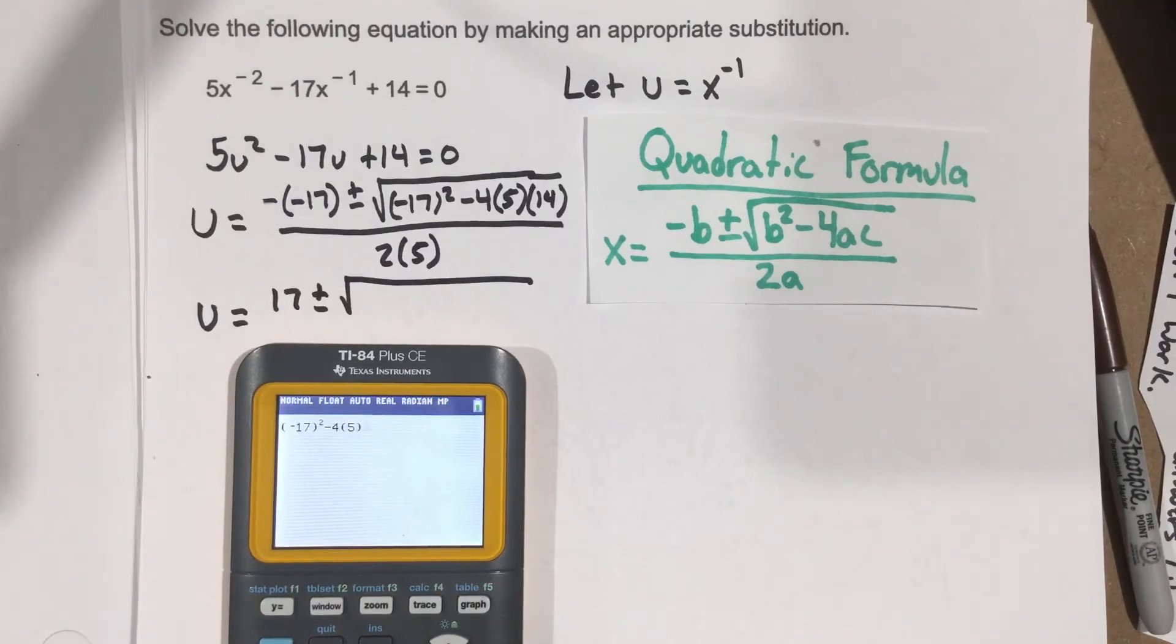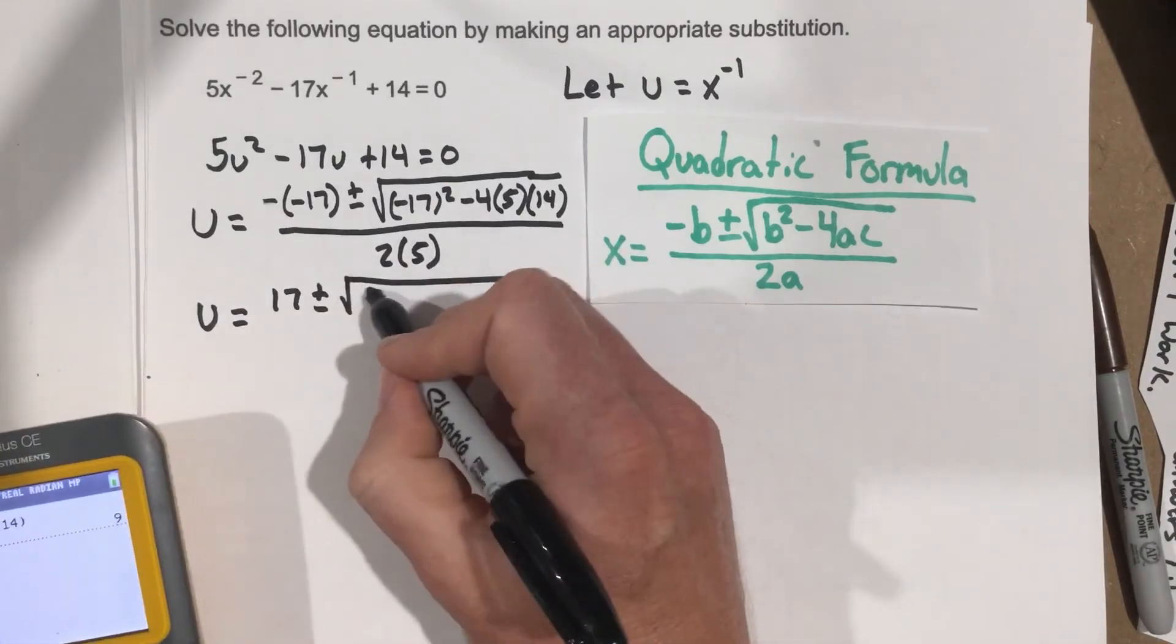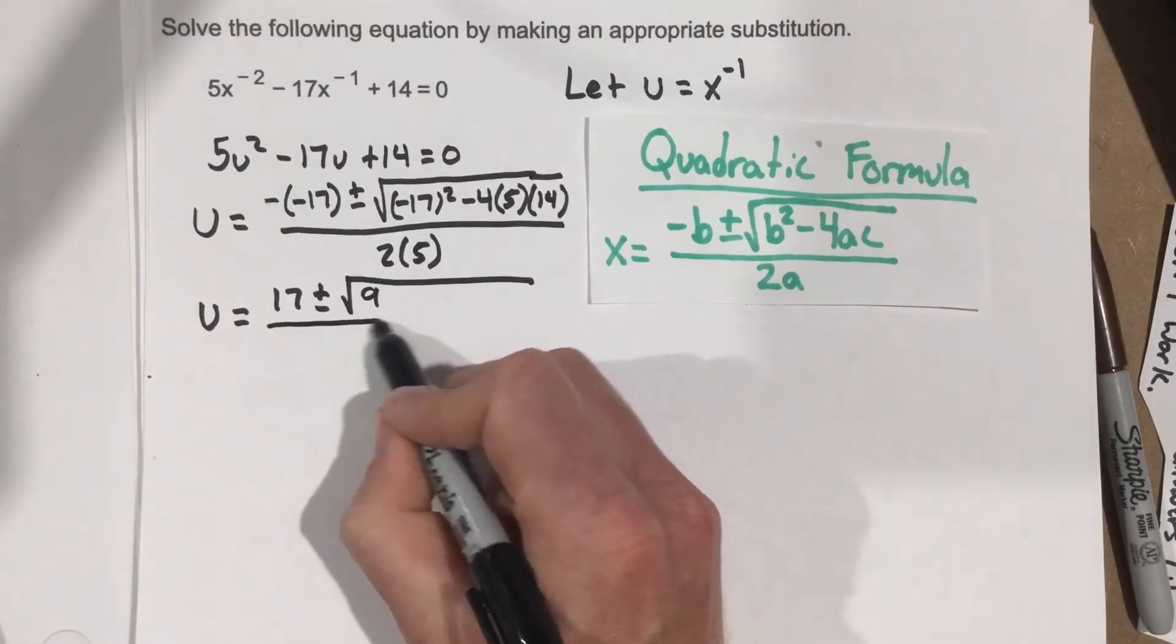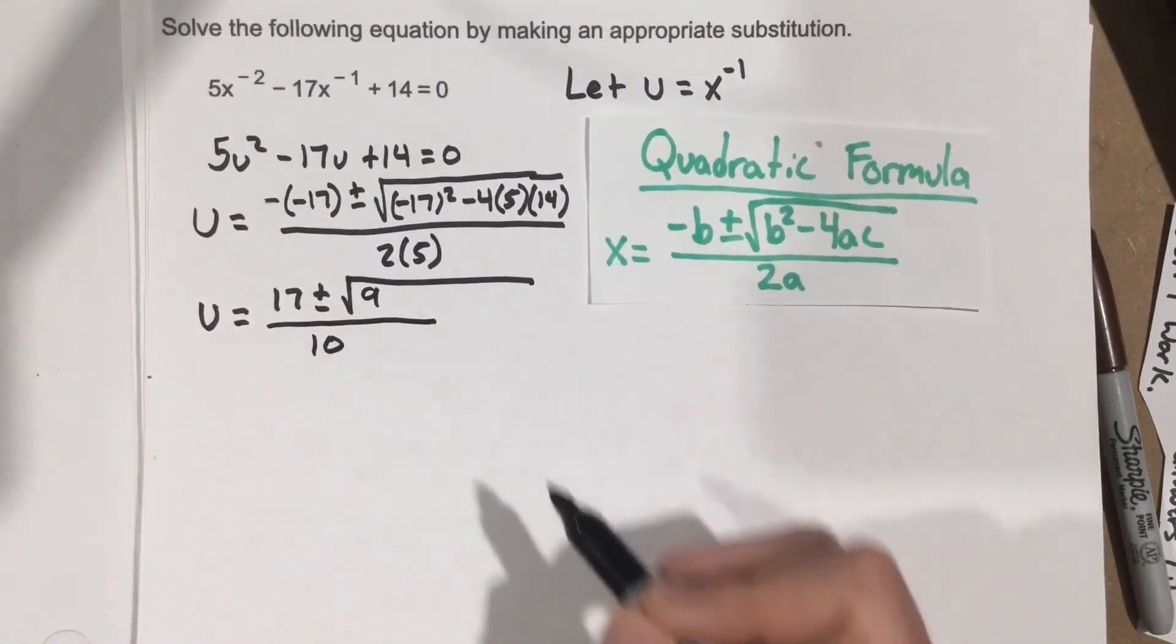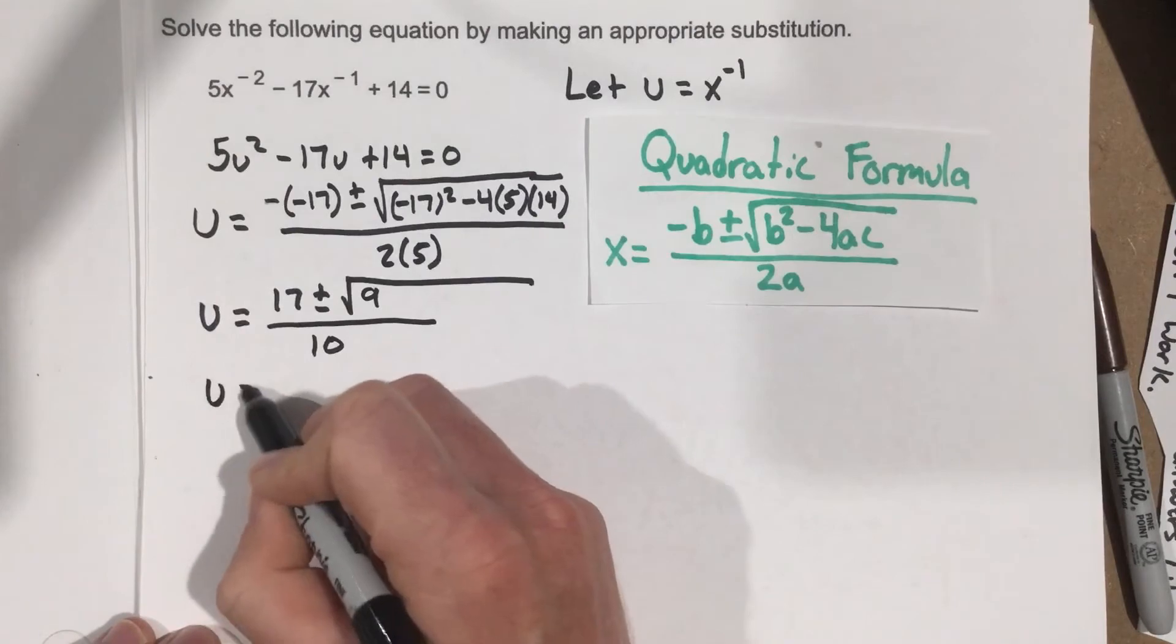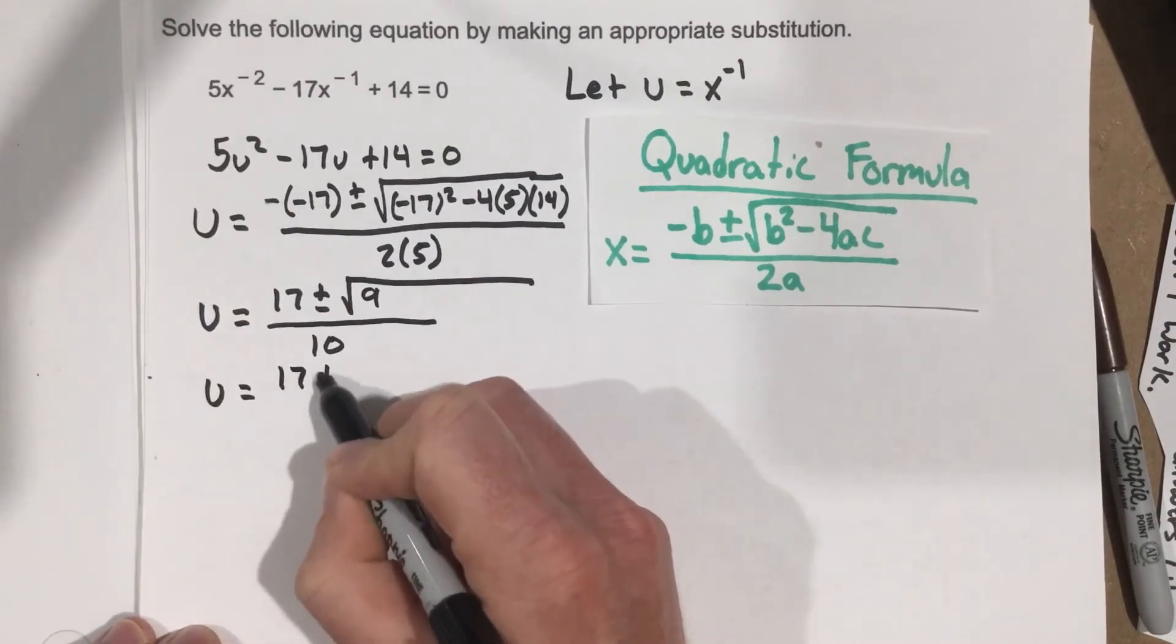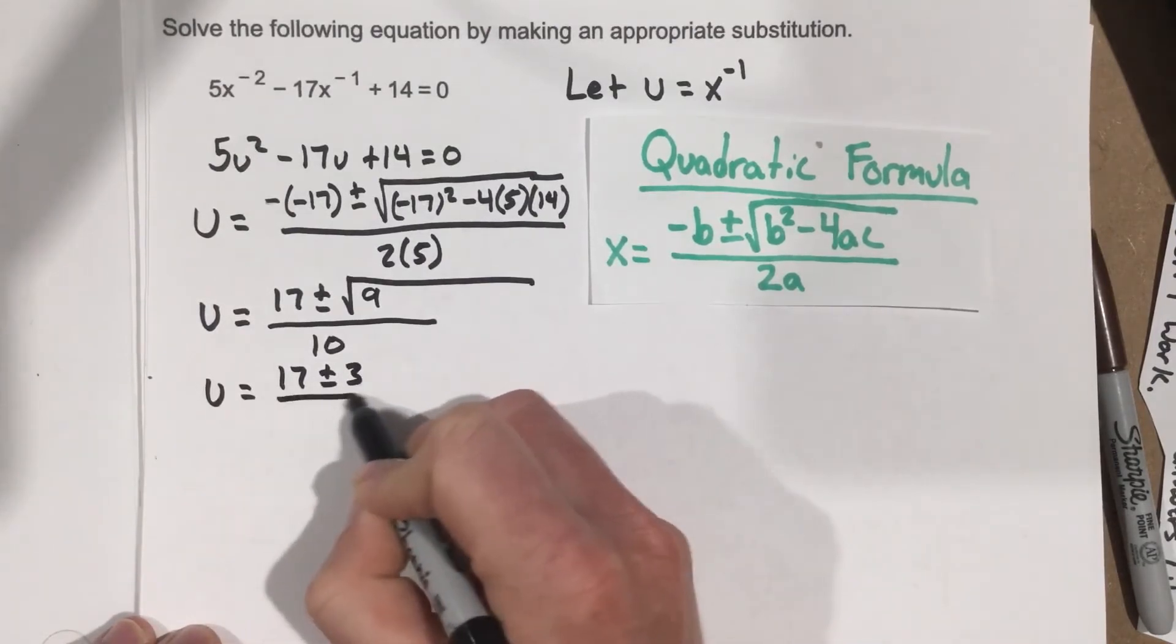times 5, times 14. That's 9. So we get root 9 here, over 10. So this gives you u equals 17 plus and minus 3, over 10,